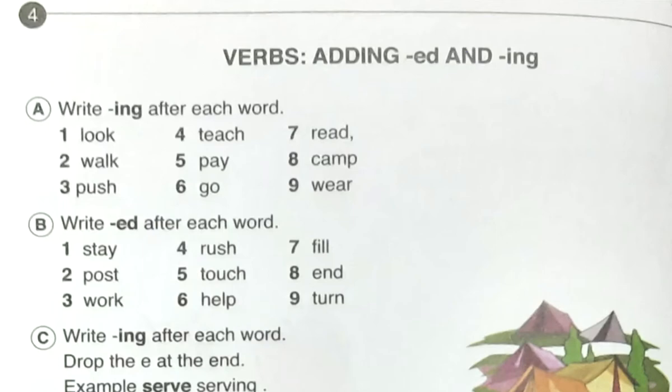Hello, hope you're fine. Now I'm going to discuss Junior English Book 2, page number 4. Today's topic is verbs adding ed and ing — we will get some words, these are verbs, and we have to add ing or ed with them.